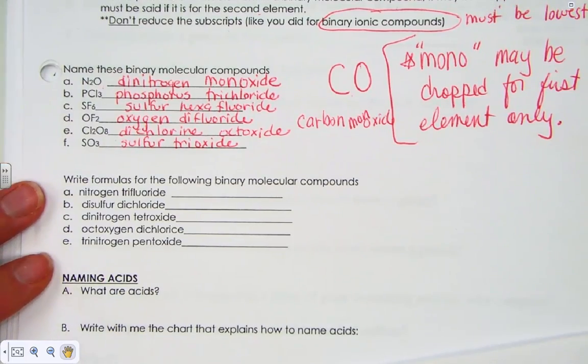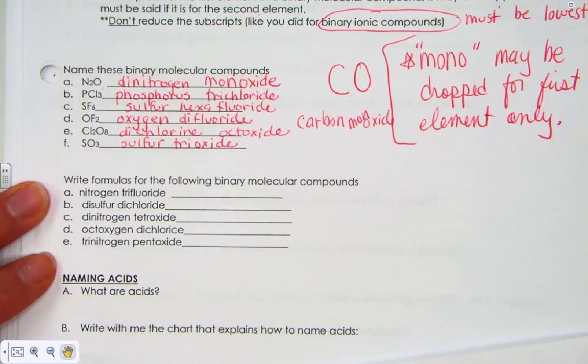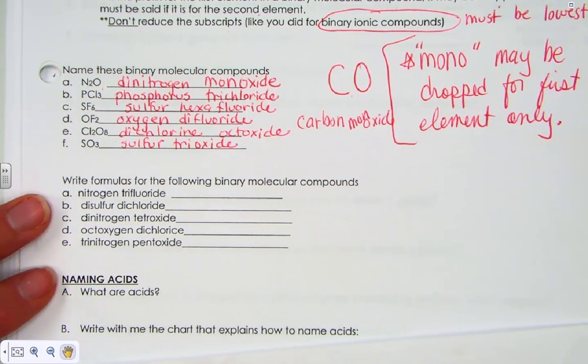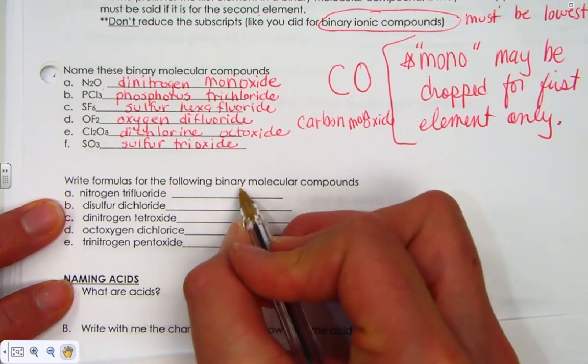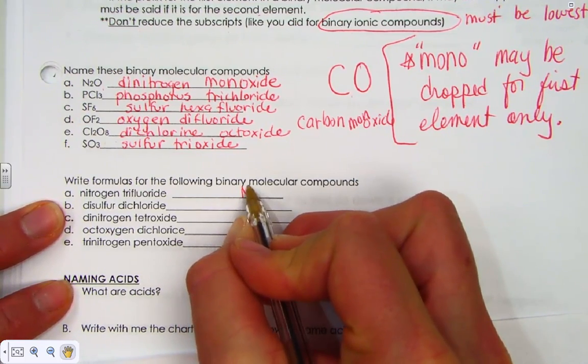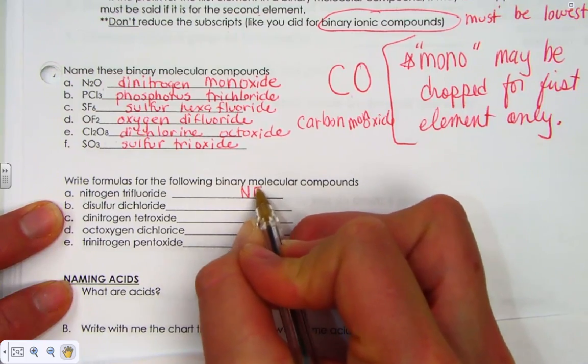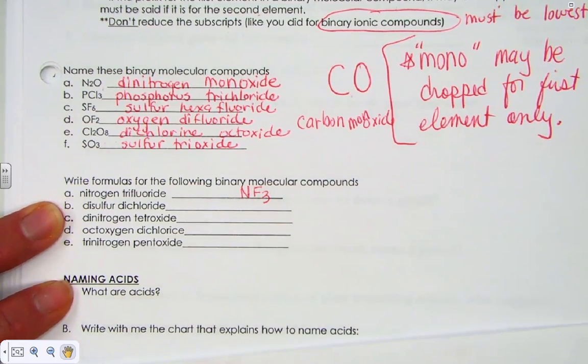Work ahead of me right now, pausing the video, and turn these names into formulas. When you've got them down, turn it back on and check your work. Letter A says nitrogen trifluoride. Nitrogen symbol is N. The symbol for fluoride is F. And to let you know there's three of them, we simply write NF3, nitrogen trifluoride.